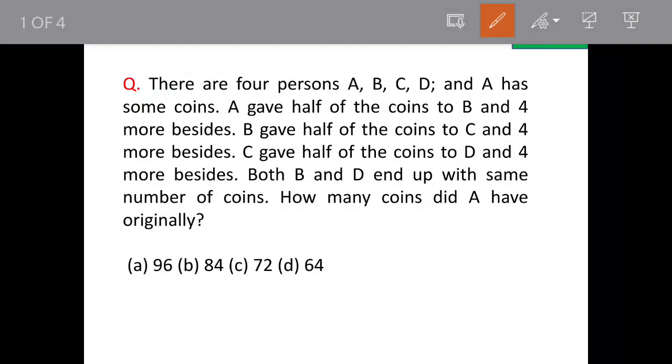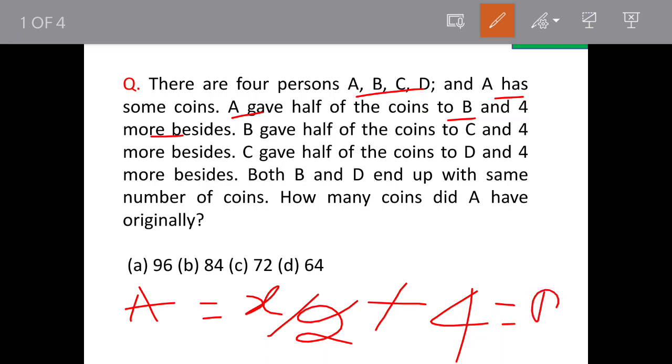There are 4 persons A, B, C and D. And A has some coins. Now A gave half of the coins to B and 4 more. So if A had say X coins, so X by 2 plus 4. These are the coins he'll give it to B.